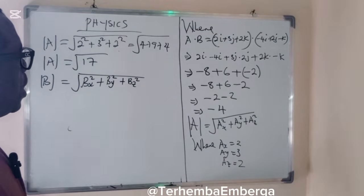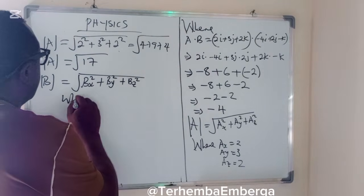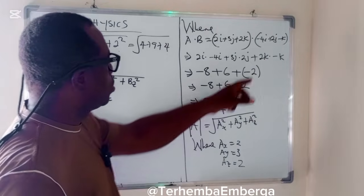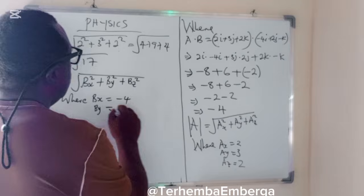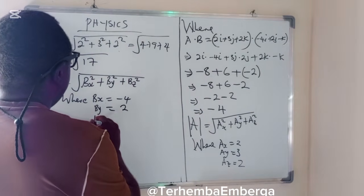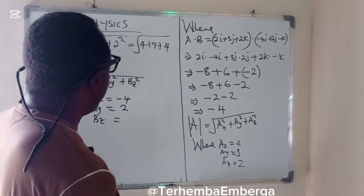So in this case, B_x is equal to minus 4, B_y is equal to 2, and B_z is equal to minus 1.